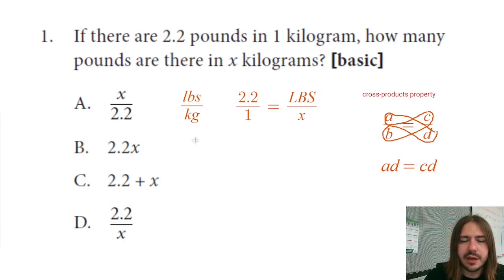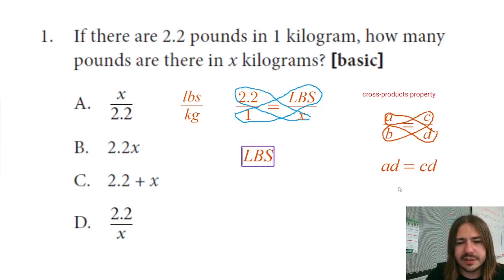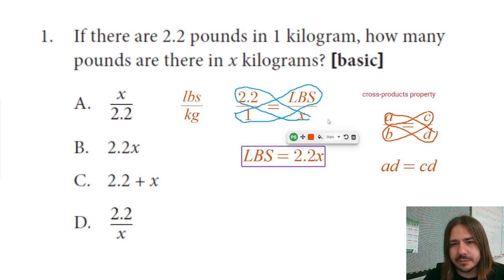This cross products property, we're going to multiply 2.2 by x and then 1 times our pounds. Now 1 times anything is just going to be the anything. So 1 times the number of pounds that we're looking for is just going to be the number of pounds. You can stick a 1 in front of it, but you don't need to. Then that's going to equal 2.2 times x. And that's basically it. The number of pounds in x kilograms would be 2.2 times that number.